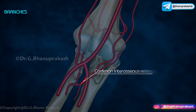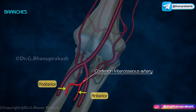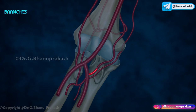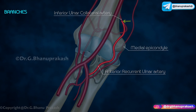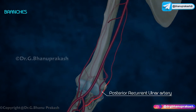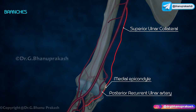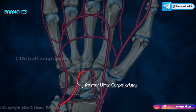Branches: the common interosseous artery divides into anterior and posterior branches. The anterior recurrent ulnar artery anastomoses with the inferior ulnar collateral artery in front of the medial epicondyle. The posterior recurrent ulnar artery anastomoses with the superior ulnar collateral artery behind the medial epicondyle.